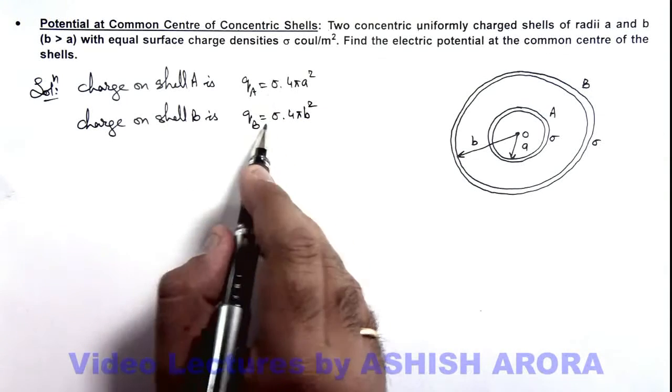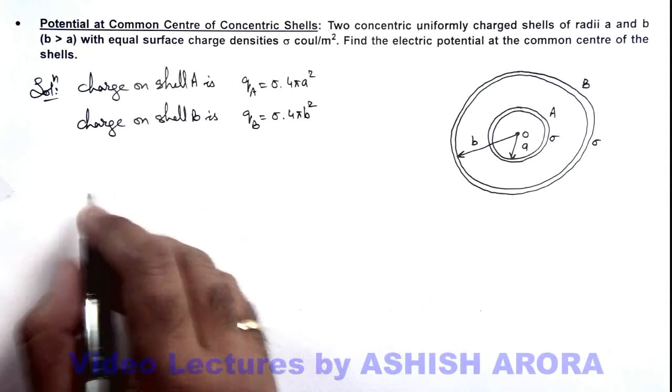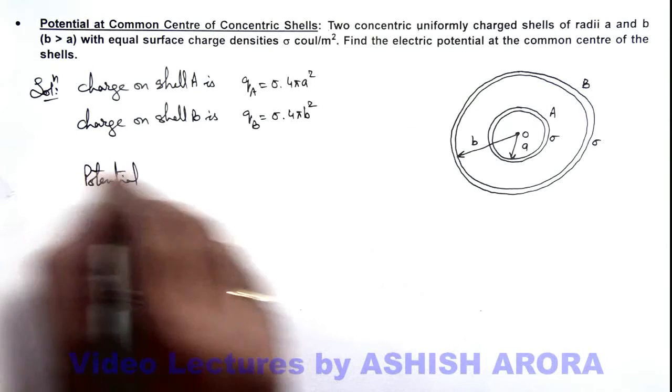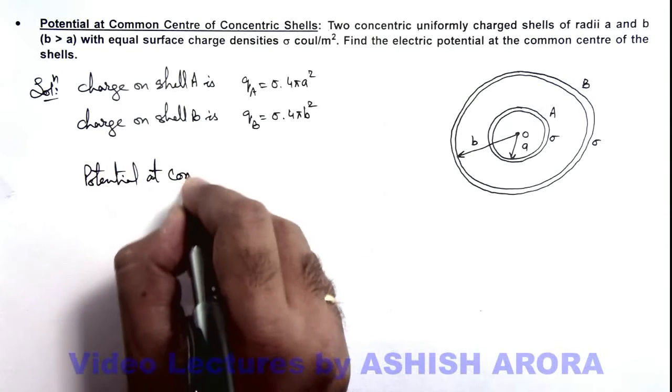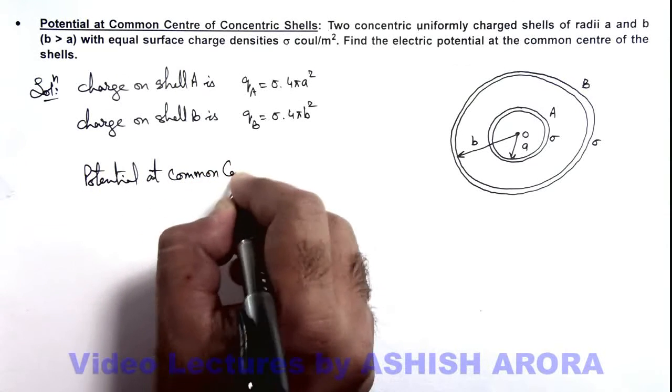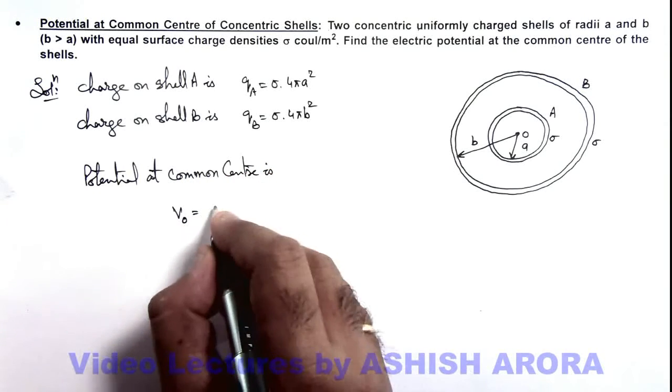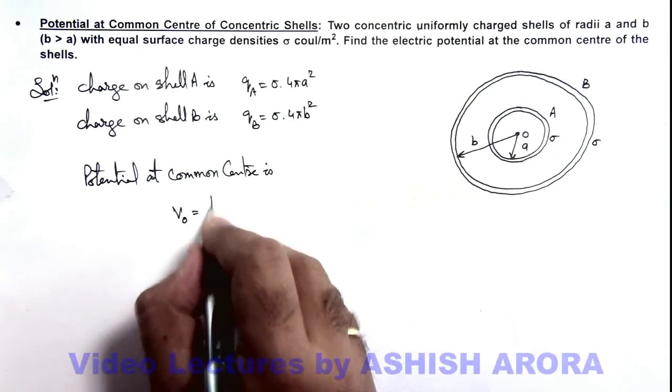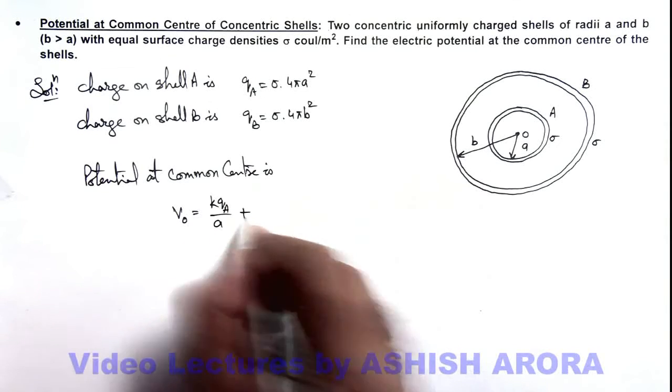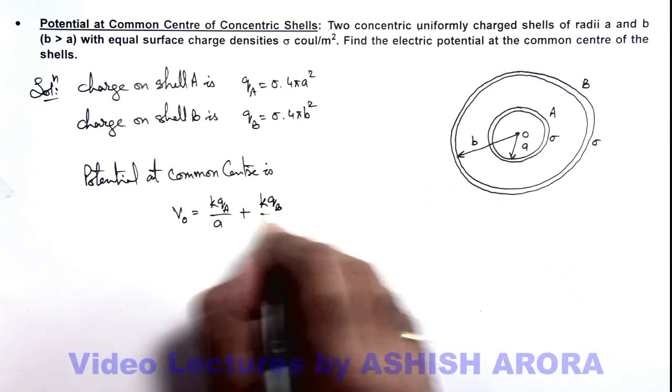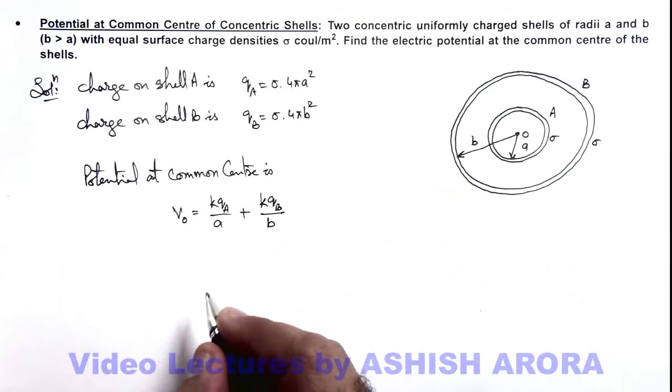If we are having the charges on the two shells we can calculate the potential at common center. This V_O we can write as due to the shell a it is kq_a by a, plus due to the shell b it can be written as kq_b by b.